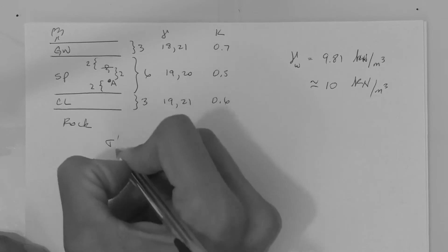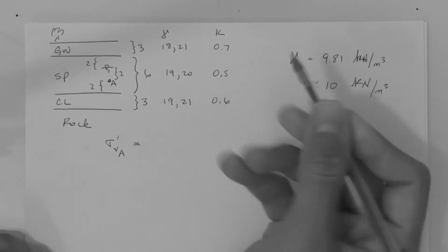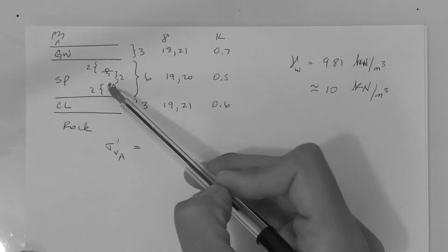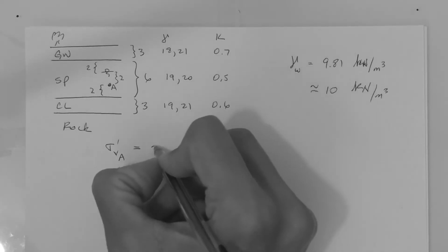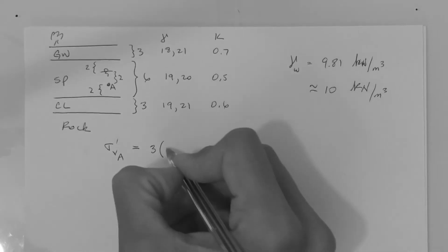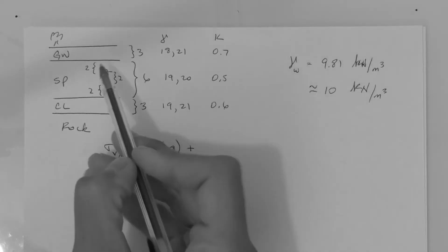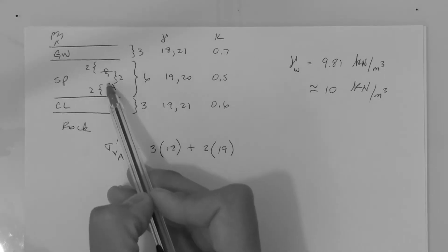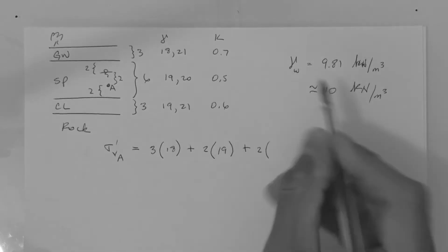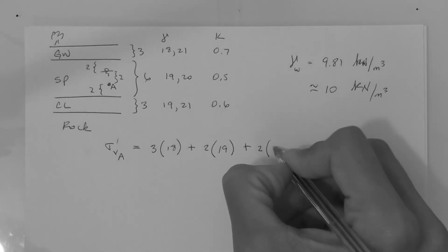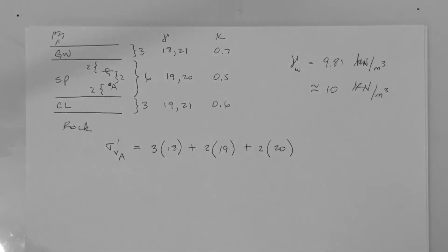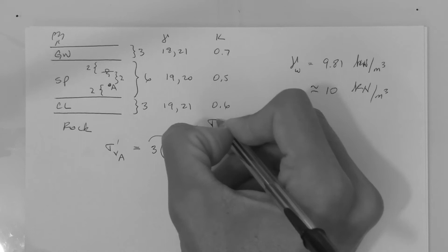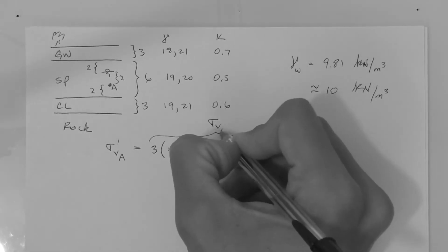Let's begin with the vertical effective stress at point A. To find this value, we add all the components above the point starting from the top: 3 meters of dry gravel times 18, plus 2 meters of dry sand times 19, plus 2 meters of saturated sand times 20. This is the total vertical stress at point A.